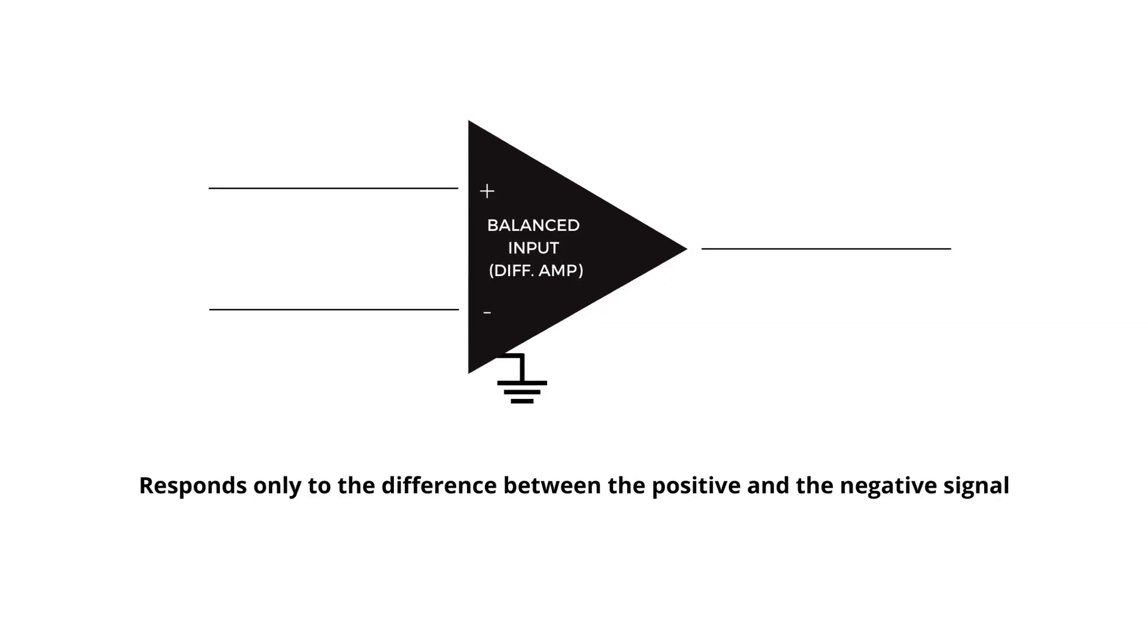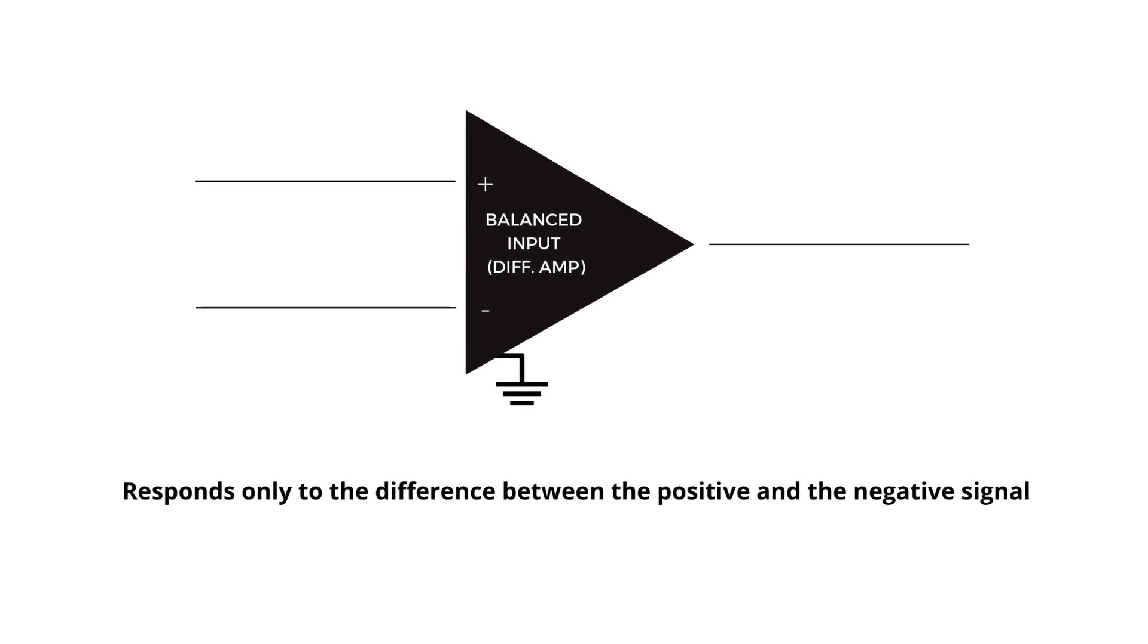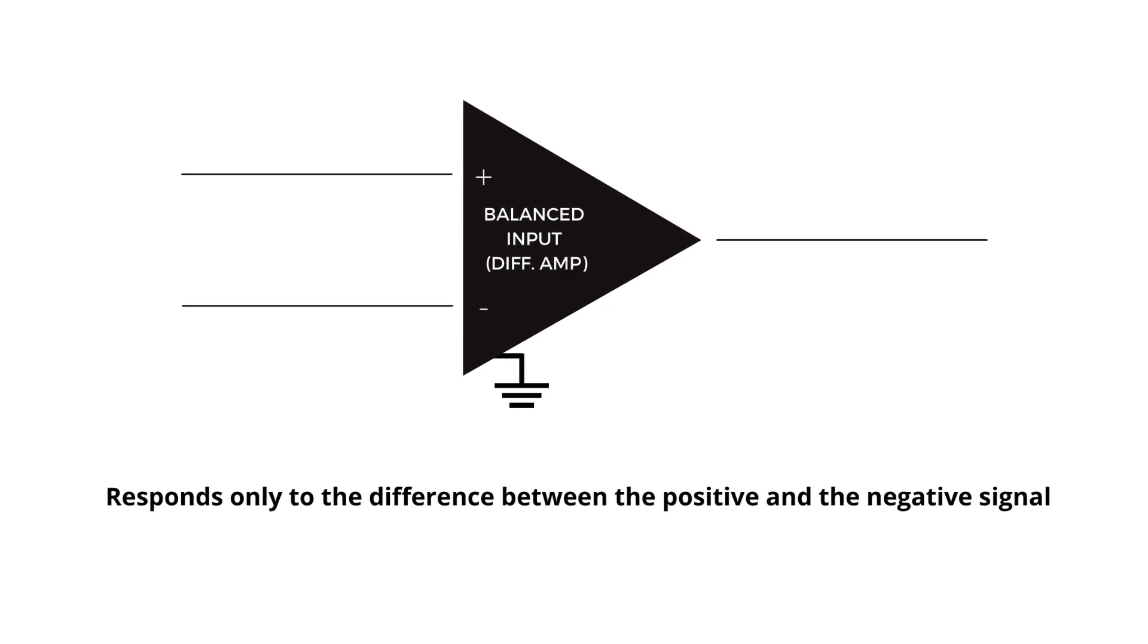The input of a balanced receiver is a differential amplifier which responds only to the difference between two signals and ignores any part of the signal that is the same in each conductor. What that means is that the signal that goes through the differential amplifier is the signal in the positive conductor minus the signal in the negative conductor.